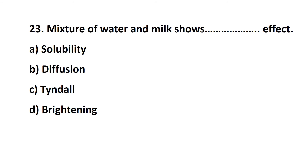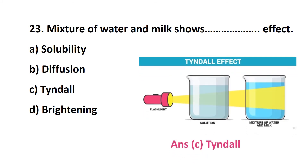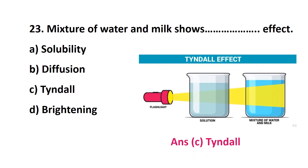Question 23: a mixture of water and milk shows the __ effect — option A: solubility, option B: diffusion, option C: Tyndall, option D: brightening. The answer is option C: Tyndall effect. When we pass light rays through a solution or any substance, it disperses the light. In a pure solution the light does not disperse, but in a mixture of water and milk the light disperses because the particle size is larger. This is the Tyndall effect.